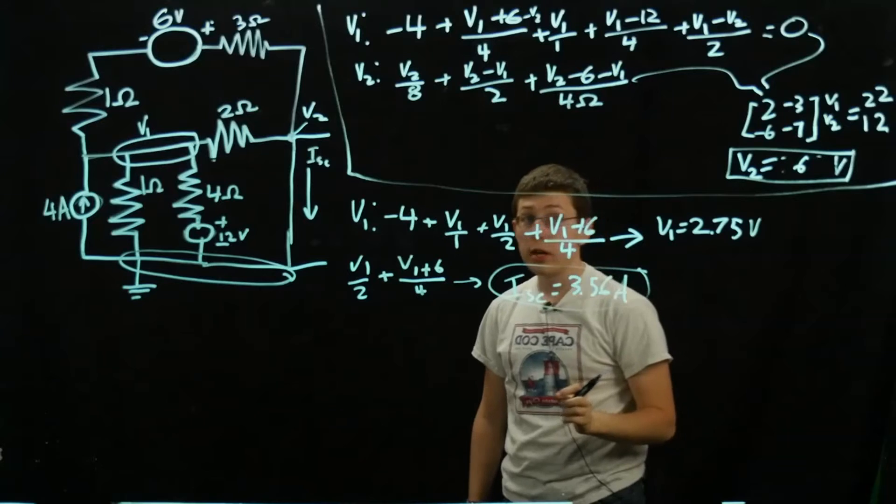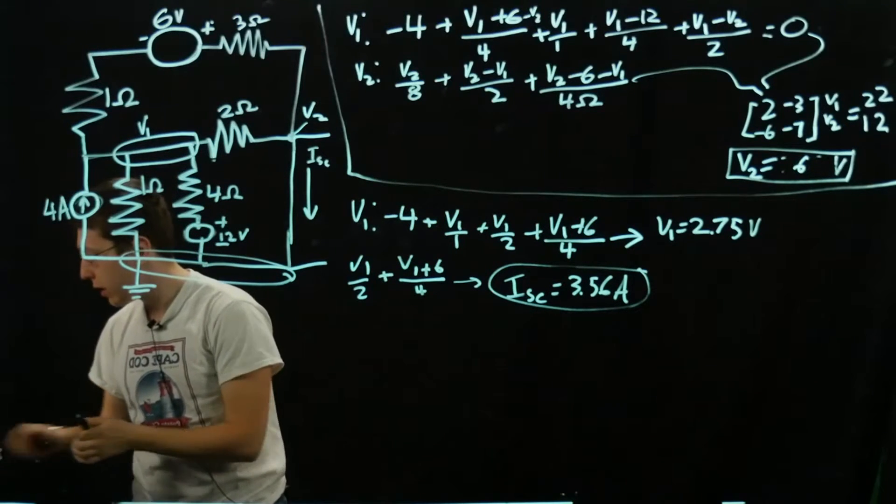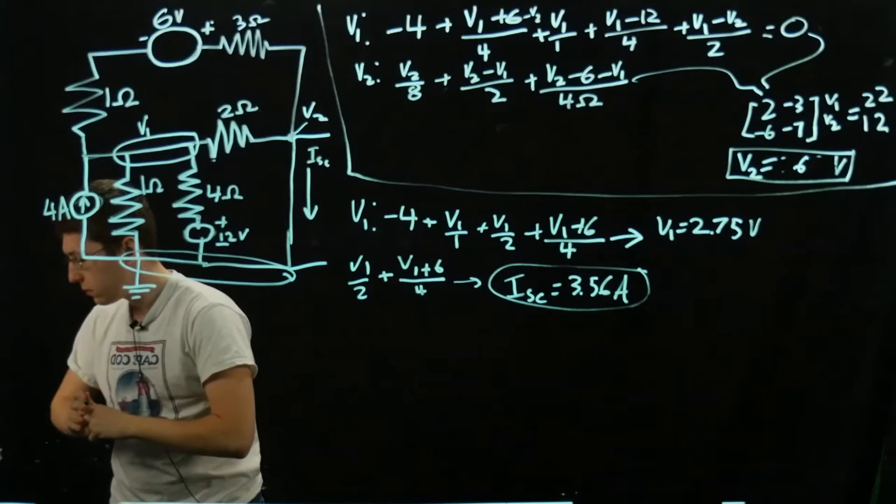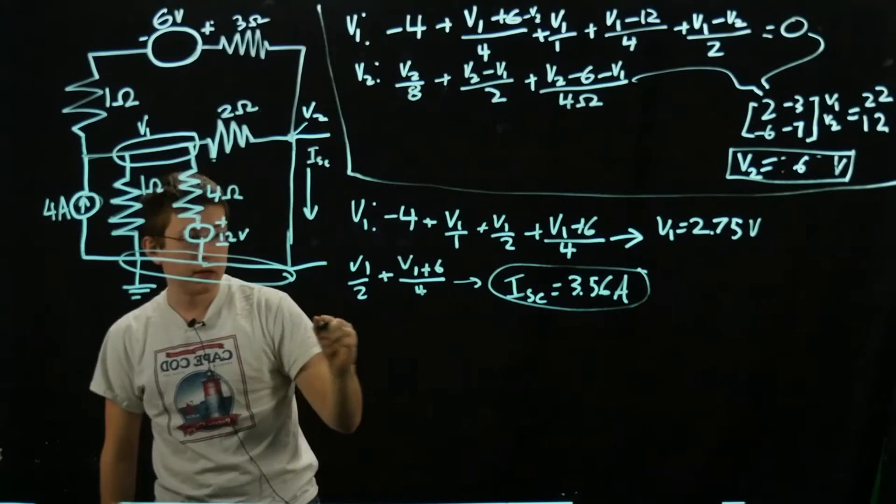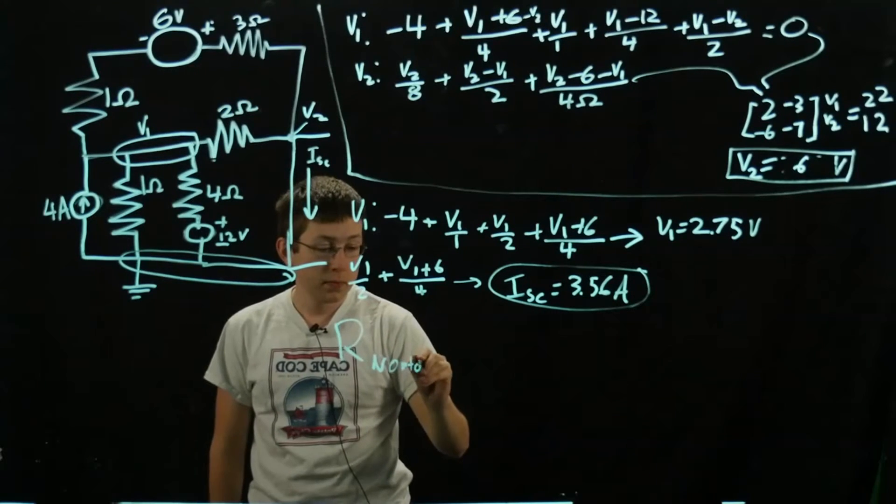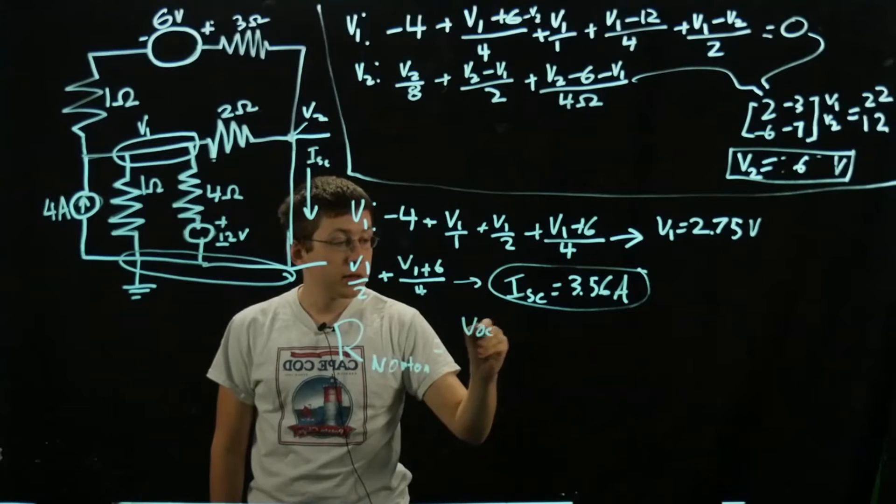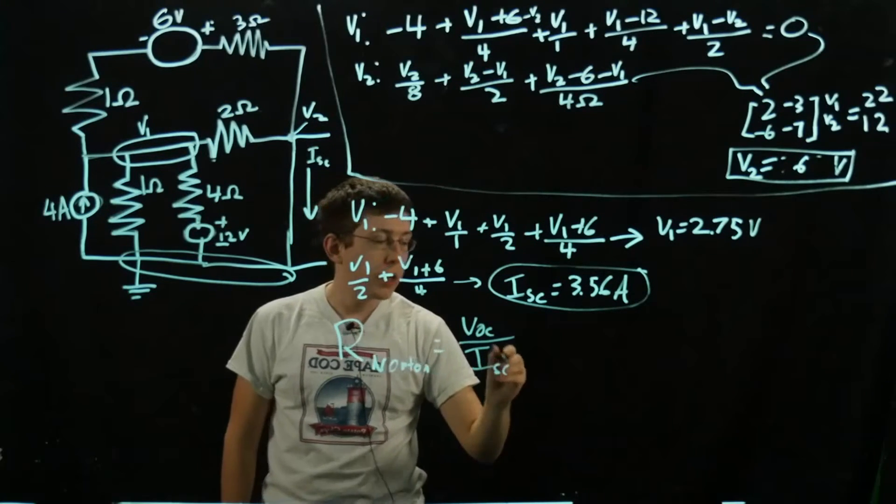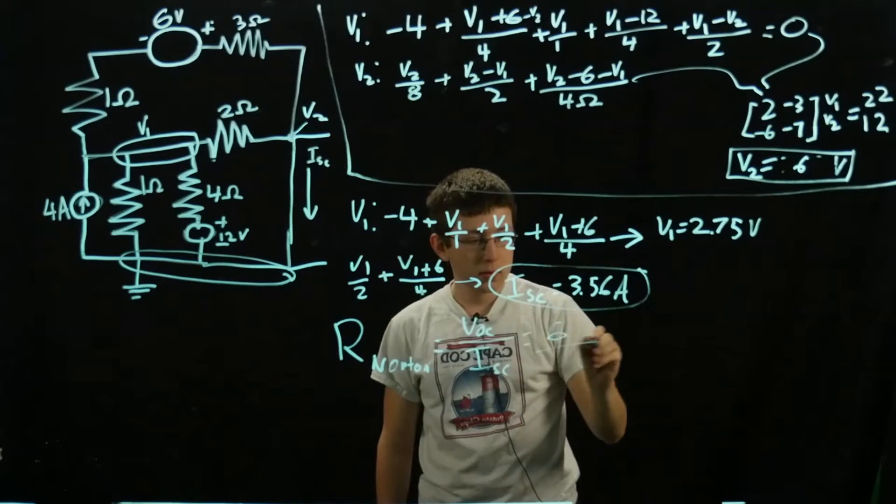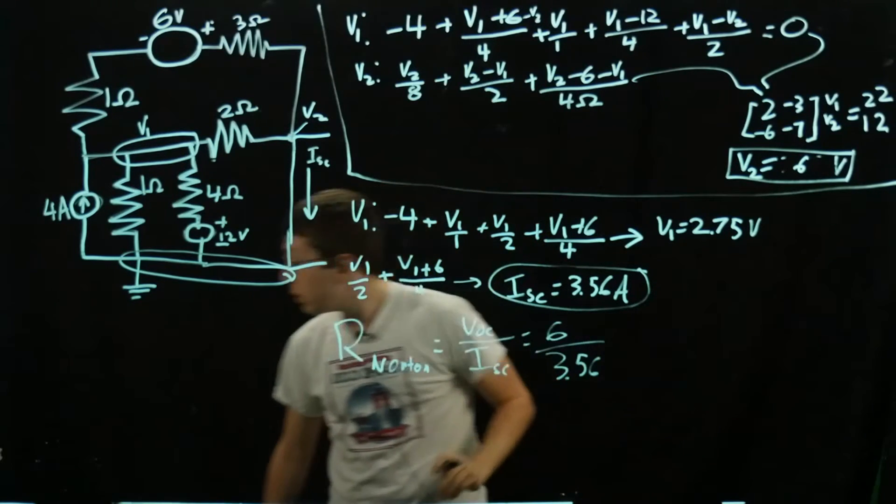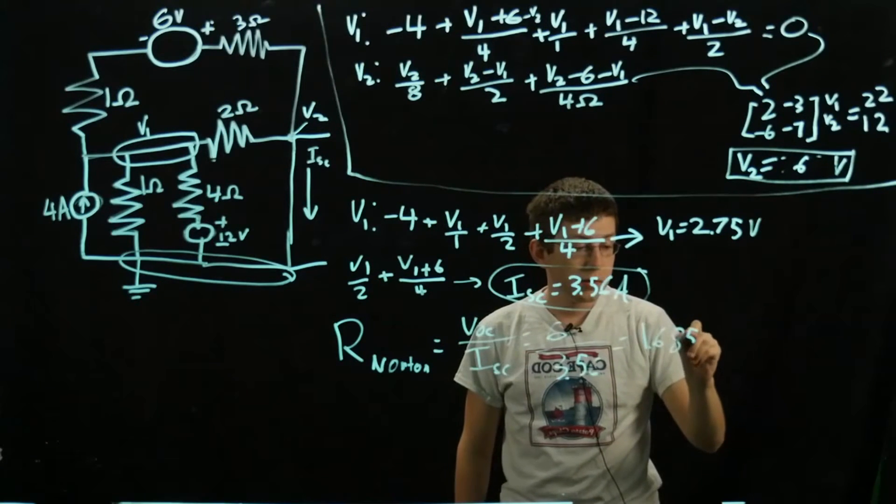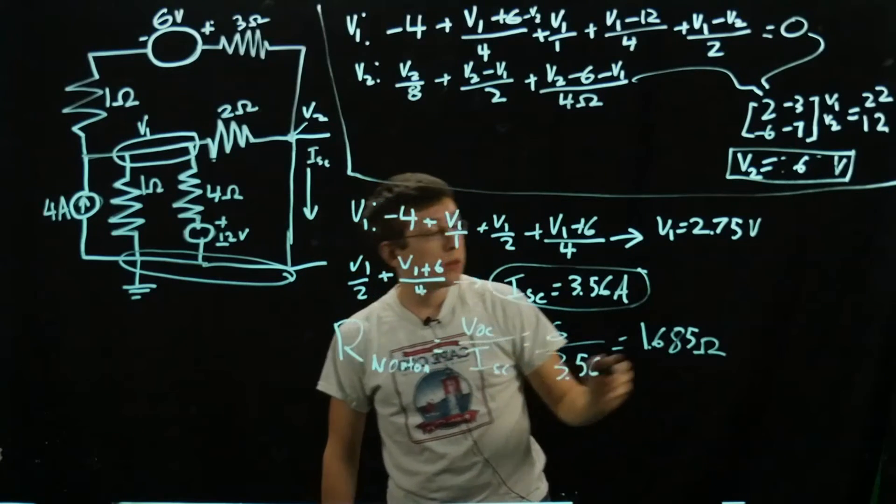We're even closer to finish now. All that's left is to find our resistance, and that is just a simple division. Our R Norton is VOC over ISC, VOC being 6 volts. We end up with 1.685 ohms.